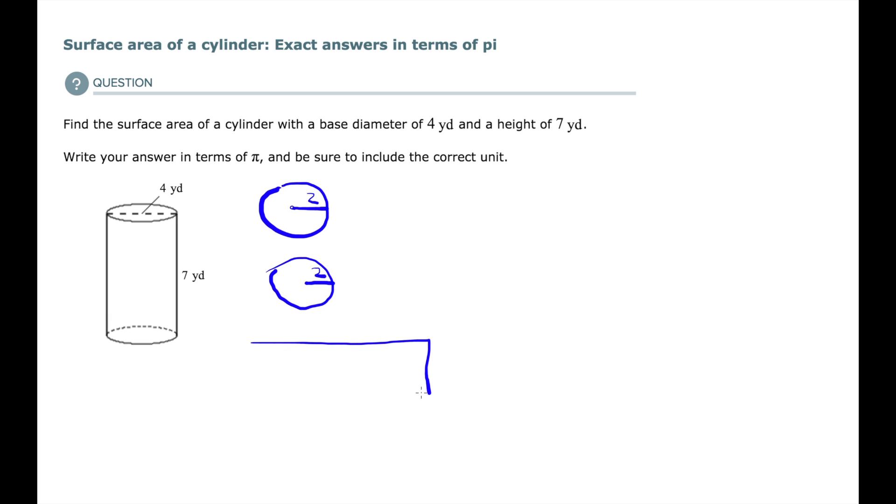And then I have my label. I should probably draw the label a little bit more accurately this time, because it is going to be kind of a tall label, because we have a tall rectangle. So my height is 7. And the width is my circumference. And how do you find circumference? Well, I take my diameter, 4, and multiply that by pi. So it's 4 pi.